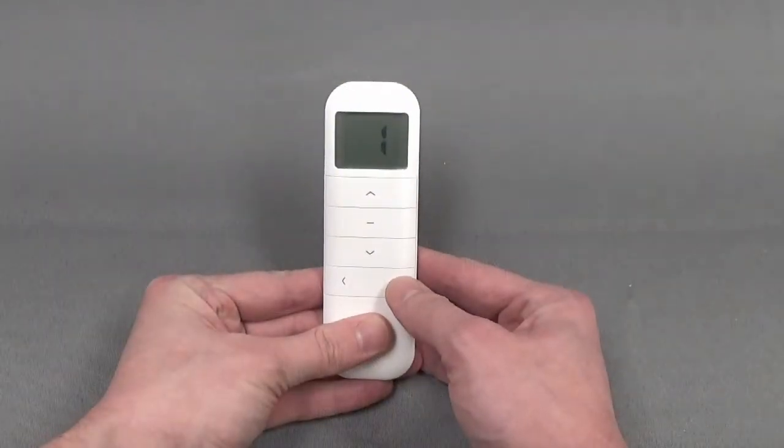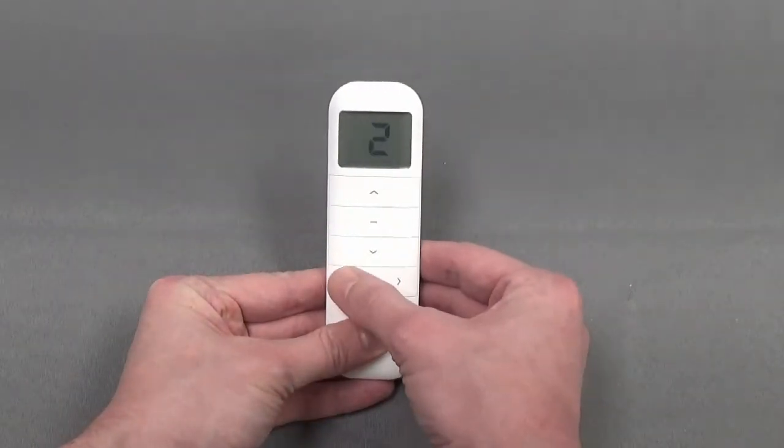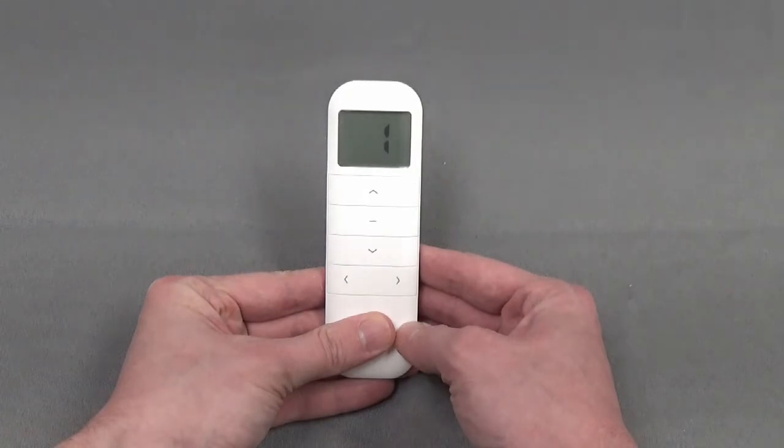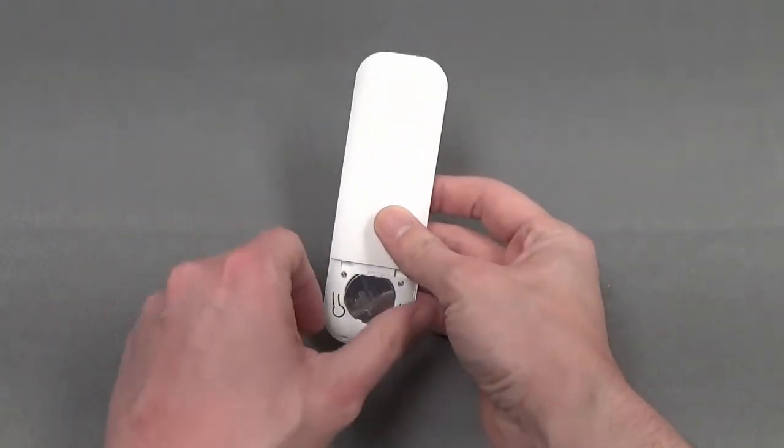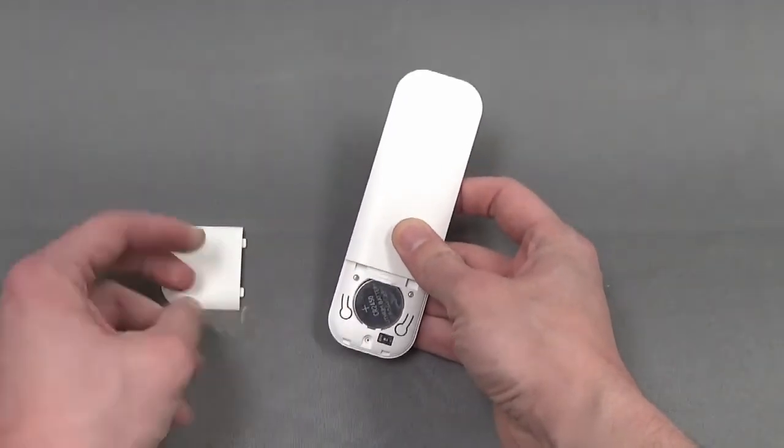Prepare your remote by selecting the channel you would like the shade programmed to. Have the remote ready for the next steps. If your remote appears to not be working, make sure to check that the plastic seal behind the battery has been removed.